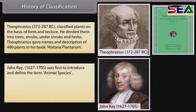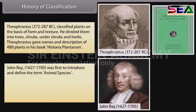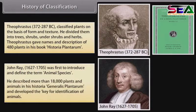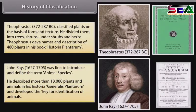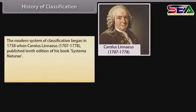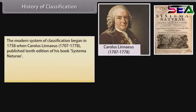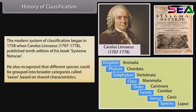John Ray (1627–1705) was the first to introduce and define the term animal species. He described more than 18,000 plants and animals in his Historia Generalis Plantarum and developed a key for identification of animals. The modern system of classification began in 1758 when Carolus Linnaeus (1707–1778) published the 10th edition of his book Systema Naturae. He also recognized that different species could be grouped into broader categories called taxon, based on shared characteristics.